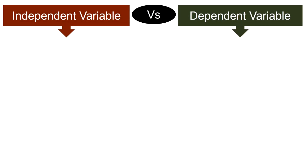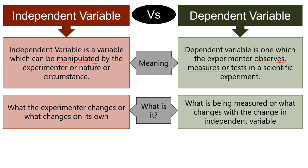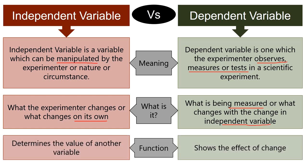Now let's discuss the differences between independent and dependent variable. Meaning: an independent variable is a variable which can be manipulated by the experimenter, nature, or circumstance during the experiment, whereas a dependent variable is one which the experimenter observes, measures, or tests in a scientific experiment. An independent variable is what the experimenter changes or what changes on its own, while a dependent variable changes with the change in the independent variable. The independent variable determines the value of another variable, while the dependent variable shows the effect of that change.